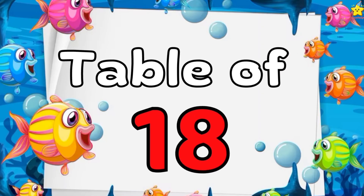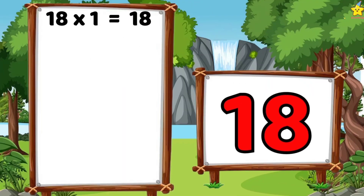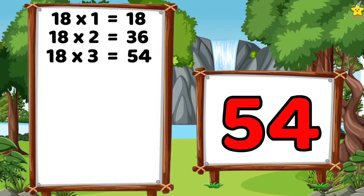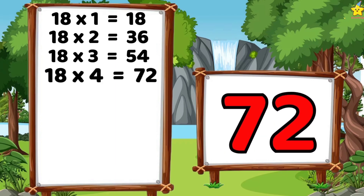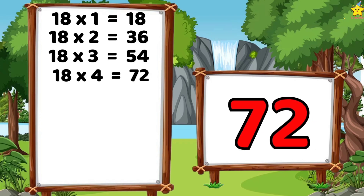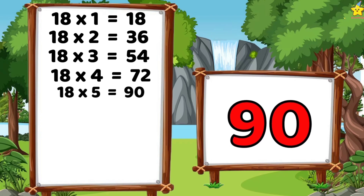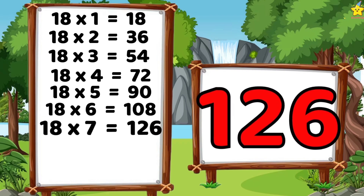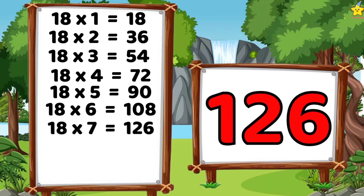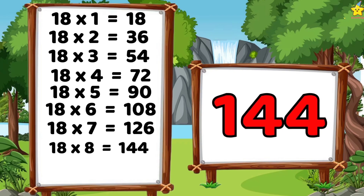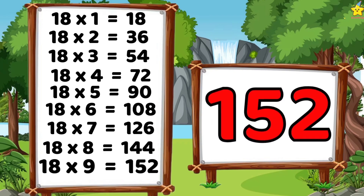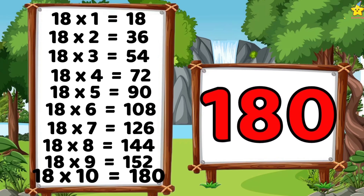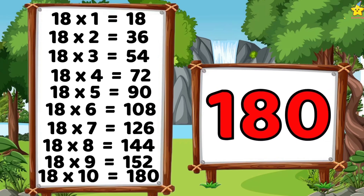Table of 18. 18 ones are 18. 18 twos are 36. 18 threes are 54. 18 fours are 72. 18 fives are 90. 18 sixes are 108. 18 sevens are 126. 18 eights are 144. 18 nines are 162. 18 tens are 180. Let's again.